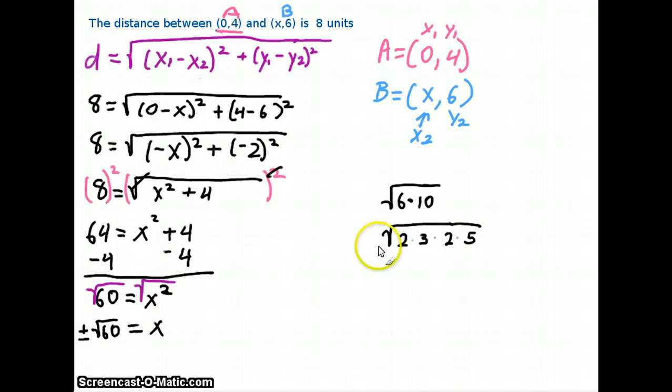And looking at this, I can see that I have a 2 right here and a 2 right there, which means I get to pull them out of the square root as a single 2 and leaving 3 and 5 on the inside to give me 15.